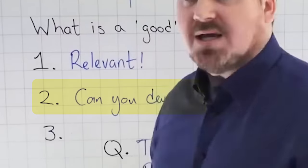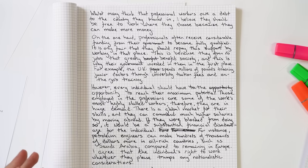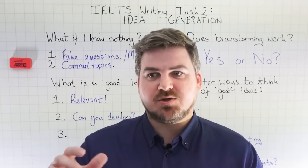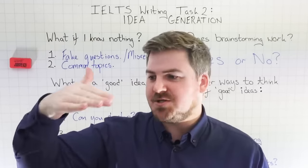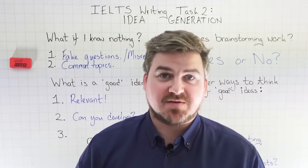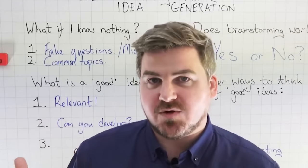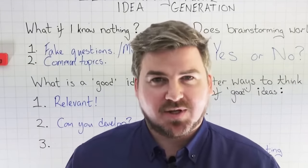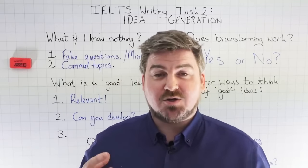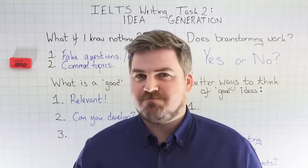The second thing is: can you develop those ideas? You might think of the most amazing idea ever, but if you can't explain it, if you can't support it with a relevant example, it's useless. In writing task two, you're not just going to write a bunch of ideas or have a main body paragraph with six or seven different ideas. You're going to have one idea and fully develop it with explanations and examples. So unless you know about that idea and can develop and explain it, don't use it.